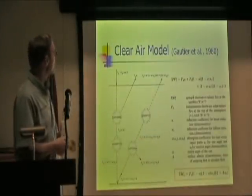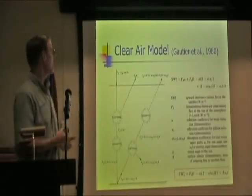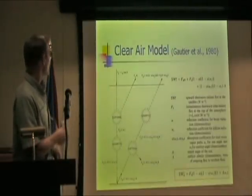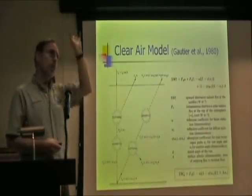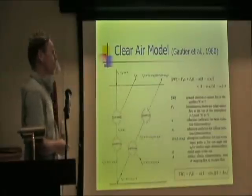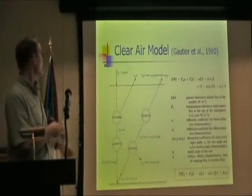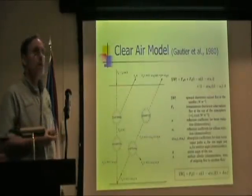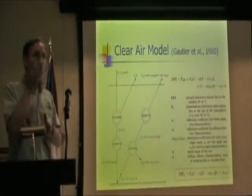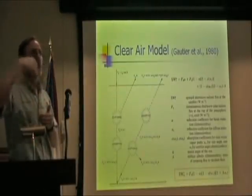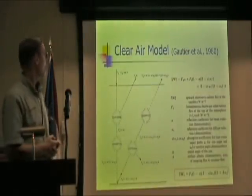So they started out with this clear air model. It's basically a radiation energy balance with this extraterrestrial radiation. It's the radiation that hits the outer atmosphere. And it's very constant and you can find these estimates in the literature, in tables as a matter of fact. So if you know where you are, you know what day of the year it is and where you are on the earth, you can determine what that extraterrestrial radiation is.